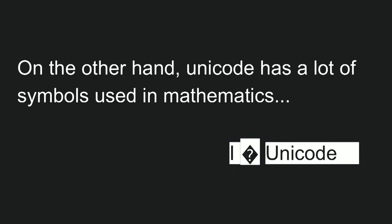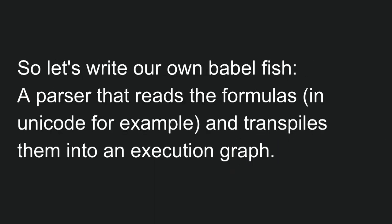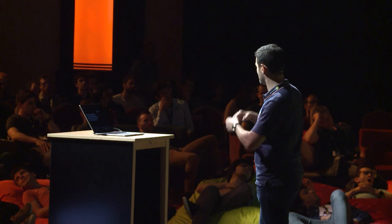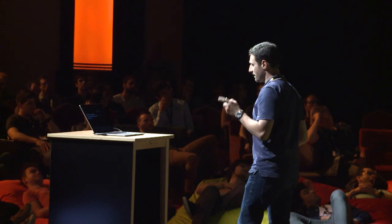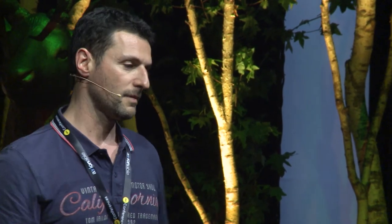There must be a better way. As of today, mathematics remains the best language to express a model, so let's use mathematics. On the other hand, we have Unicode. Unicode has a lot of symbols used in mathematics. So let's write our own Babelfish — a parser that reads formulas in Unicode and transpiles them into an execution graph. Therefore, there will be a strict separation of the execution machine, which is software 1.0, the mathematical model, which is software 2.0, and the knowledge — the weights.